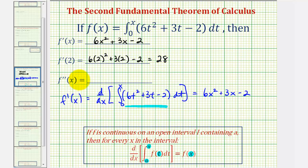And now to find f double prime, we'll find the derivative of the first derivative, which would be 12x plus 3, applying the power rule of differentiation. But let's also take the time to find f of x by evaluating this integral, and then we'll find the derivative to verify f prime of x is correct. Let's go ahead and do this on the next slide.